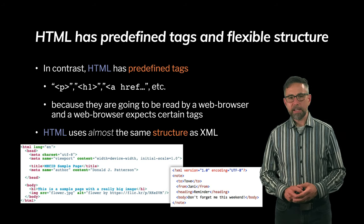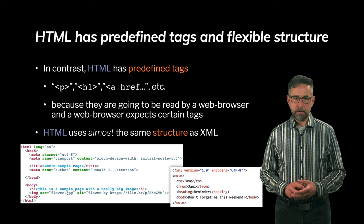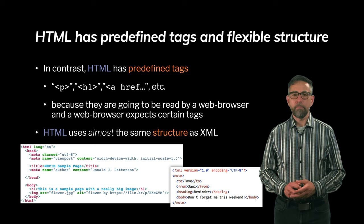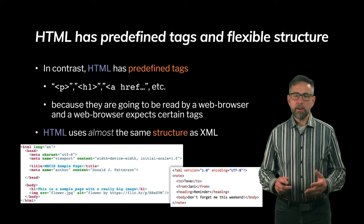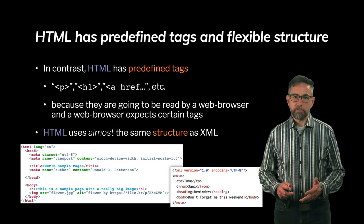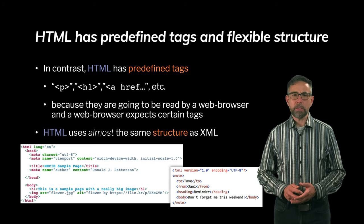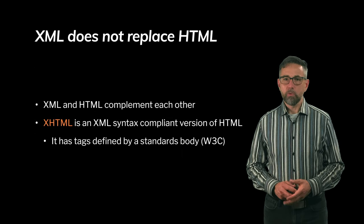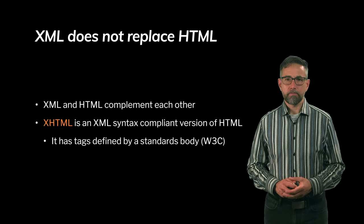On the right is a screenshot of XML and on the left is a screenshot of some HTML. Although the color coding is different — tags on the right are brown and tags on the left are red — the structure is very similar. There are opening tags and closing tags; closing tags have a forward slash before the tag name and they're embedded within one another. HTML and XML do have a lot of similarities, but XML does not replace HTML nor does HTML replace XML. They complement each other and are used to do different tasks.